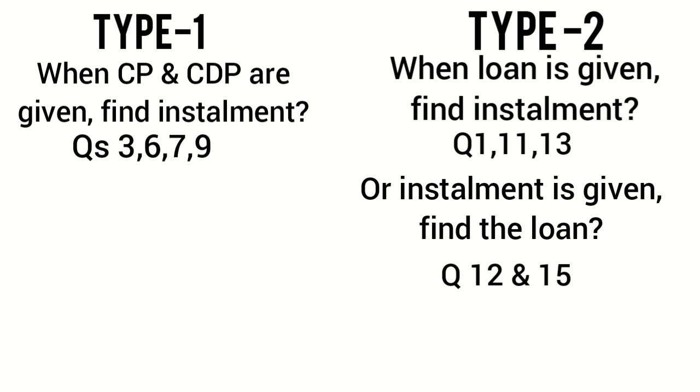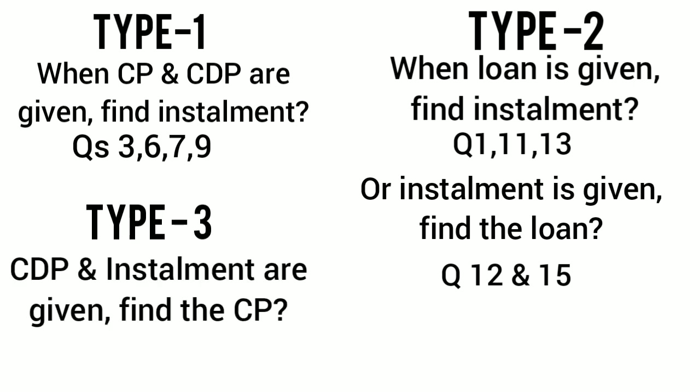The third type is they will give you cash down payment and installment, and you will have to find out cash price. These types of questions are found in number two, four, five, eight, and ten.